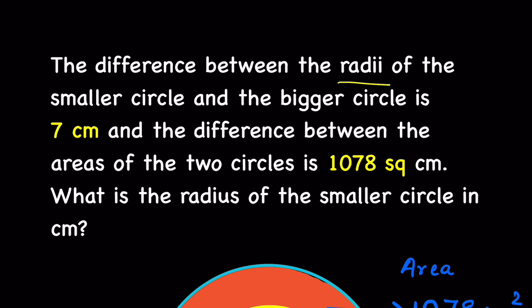The difference between the radii of the smaller circle and the bigger circle is 7 cm and the difference between the areas of the two circles is 1078 cm². What is the radius of the smaller circle?